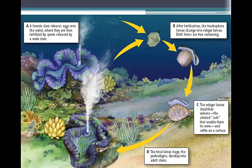Molluscs reproduce sexually. Most aquatic species release their eggs and sperm into the water at the same time and fertilization is external. A few bivalves that are terrestrial are hermaphrodites, in which case fertilization is internal. Remember, external fertilization is not a very practical reproductive strategy for terrestrial animals. All members of Mollusca share similar developmental patterns even though their adult forms vary widely. One larval stage, the trochophore, looks very similar to a segmented worm, which leads scientists to believe that they share some common ancestry.